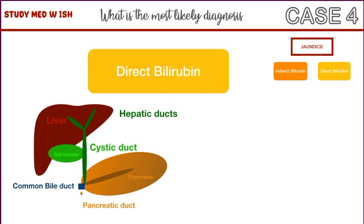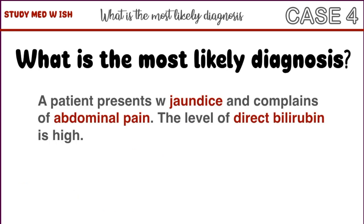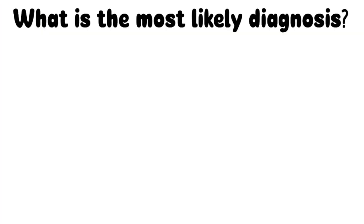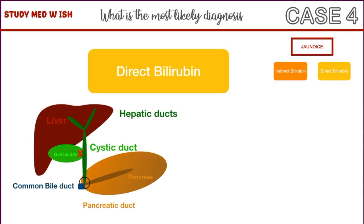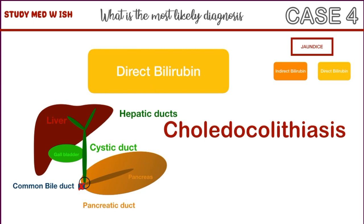The levels of direct bilirubin can be high if there is an obstruction in any of these places. Since our patient has jaundice, acute abdominal pain, and high levels of direct bilirubin, the most likely diagnosis is cholesterol gallstones. If the gallstone is present in the gallbladder or the cystic duct, it's called cholelithiasis, and if it is present in the common bile duct, it is called choledocholithiasis.